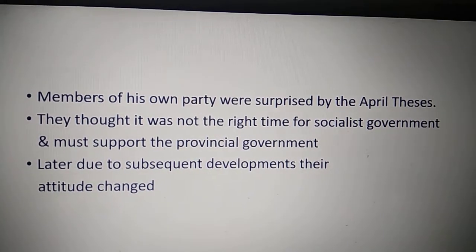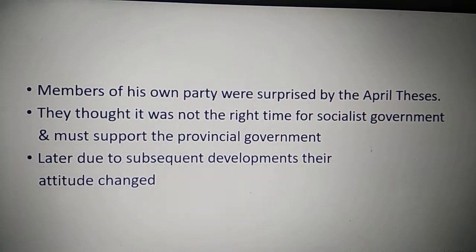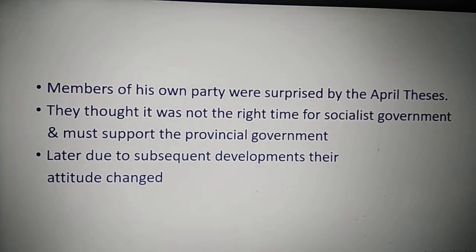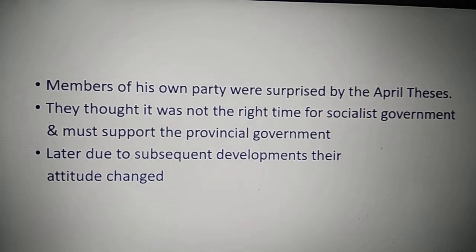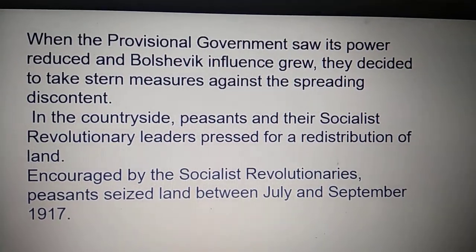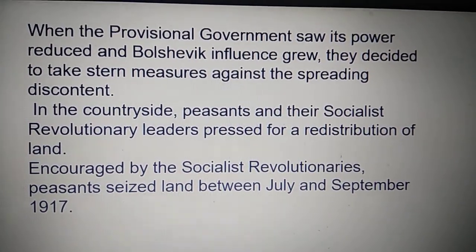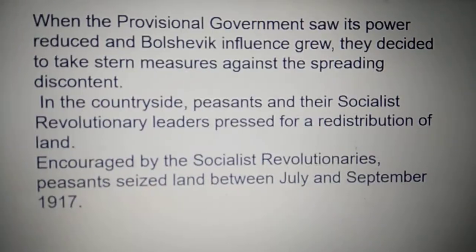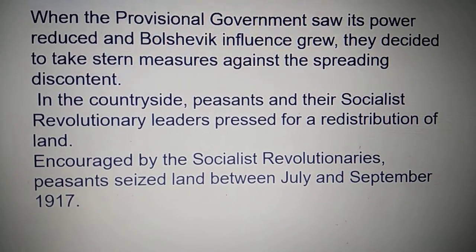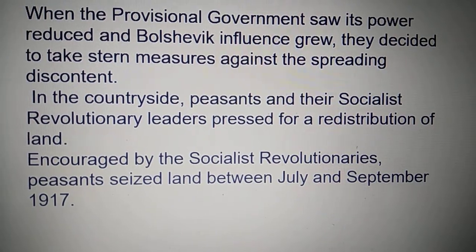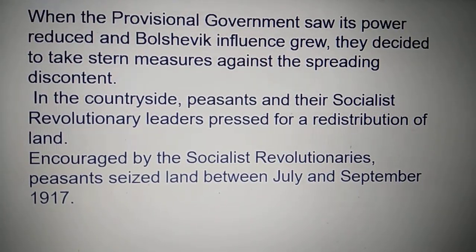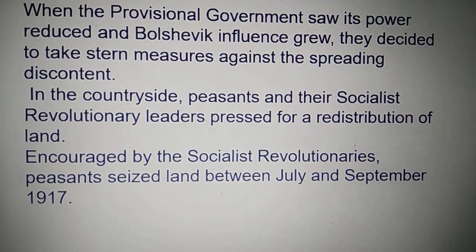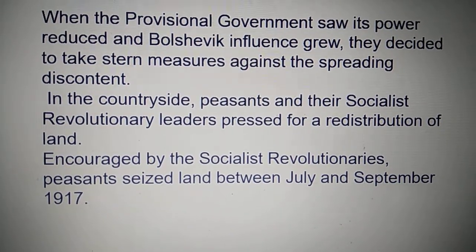Members of Lenin's own party were surprised by the April Thesis, thinking it was not the right time for a socialist government and that they should support the provisional government. But later, due to certain developments, their attitude changed and they agreed it was now the right time for a socialist or communist form of government. When the provisional government saw its power getting reduced and Bolshevik influence growing, it arrested their leaders and curbed demonstrations. In the countryside, peasants and socialist revolutionary leaders pressurized the government for redistribution of land, and the peasants seized land from the landowners between July and September 1917.